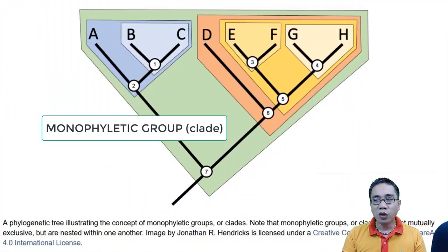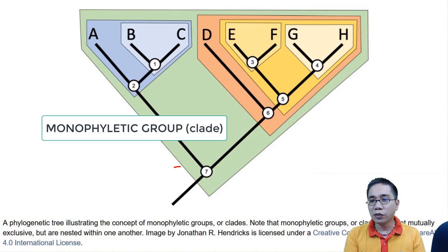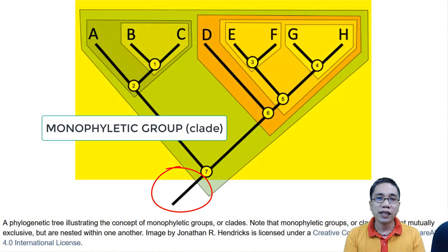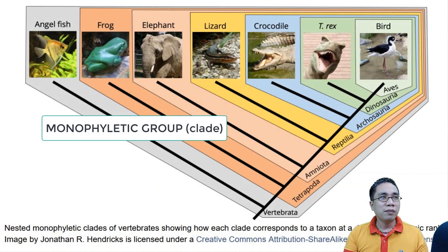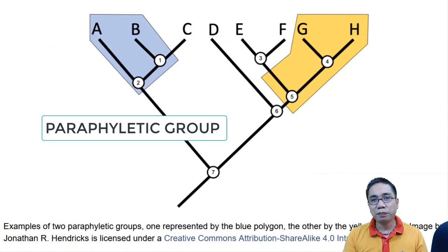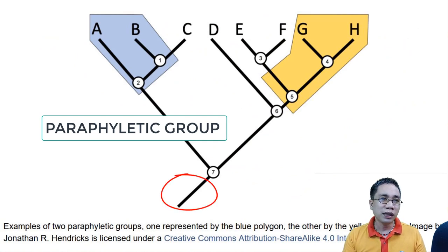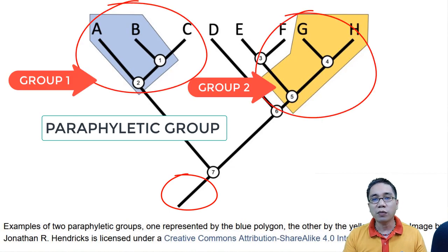Now, a monophyletic group or clade is a group consisting of a common ancestor. Now, you may also encounter groupings like a paraphyletic group, which is one consisting of a common ancestor but not all the descendants of that common ancestor.